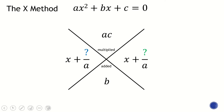This is the X method I'm talking about. First thing you need to consider is that the quadratic equation is in standard form, meaning it should be in the AX squared plus BX plus C equals 0. From there, we need to find two numbers that when multiplied, the answer is the product of A and C, and when added, the answer is B.